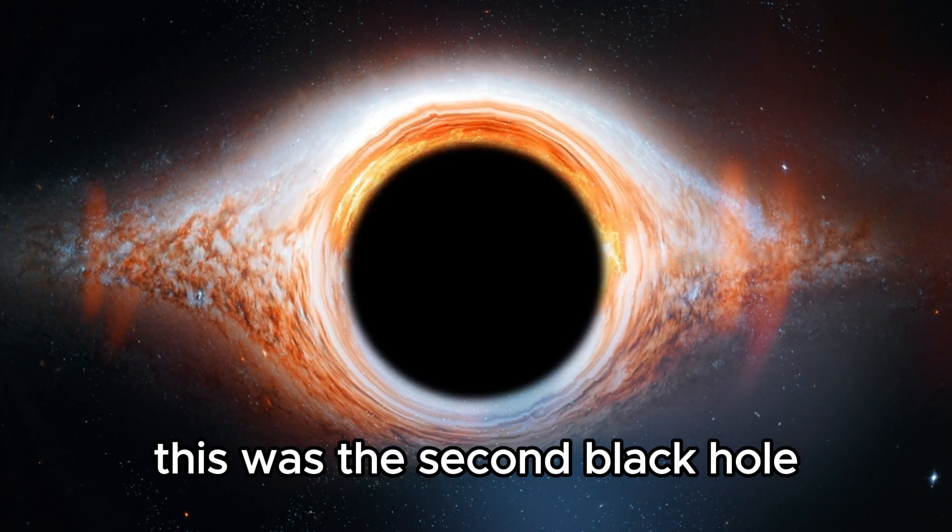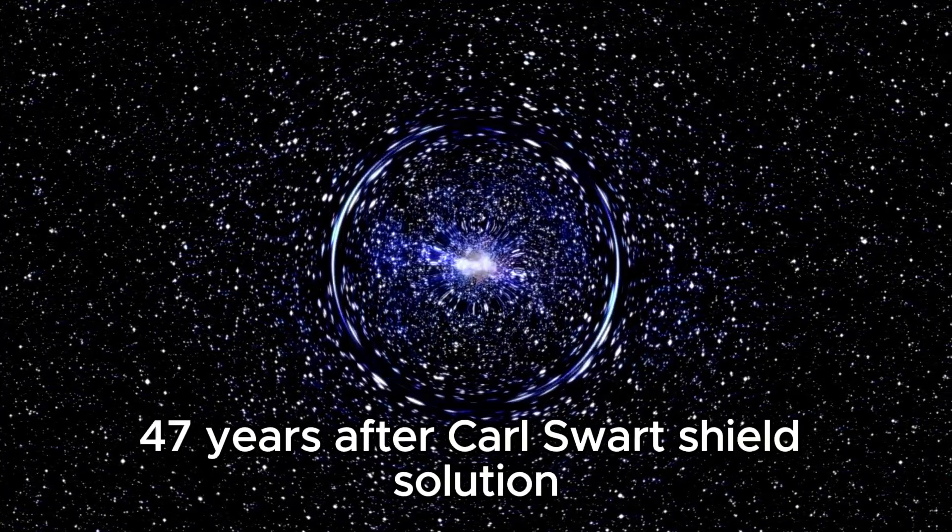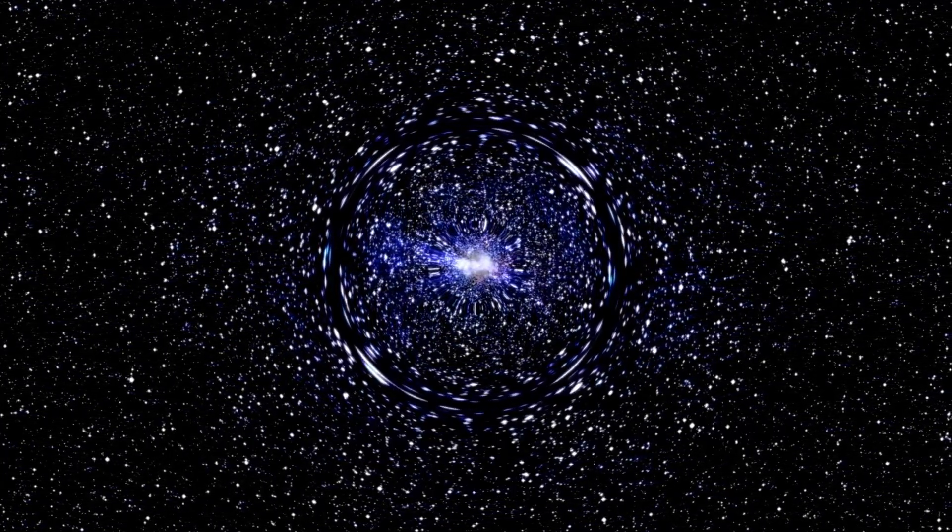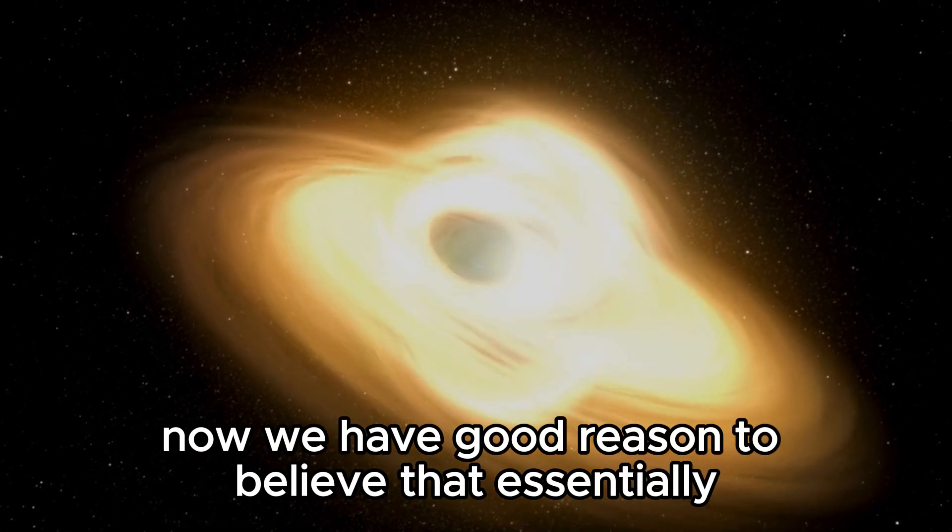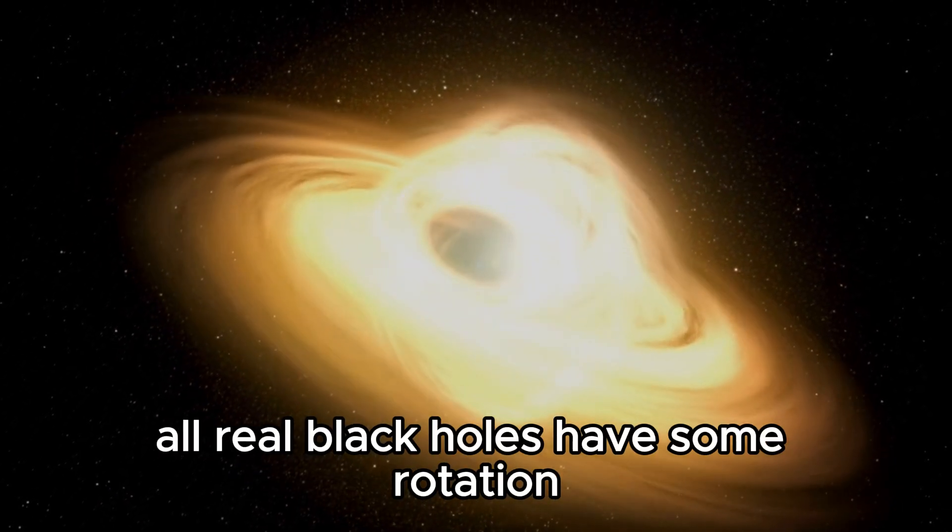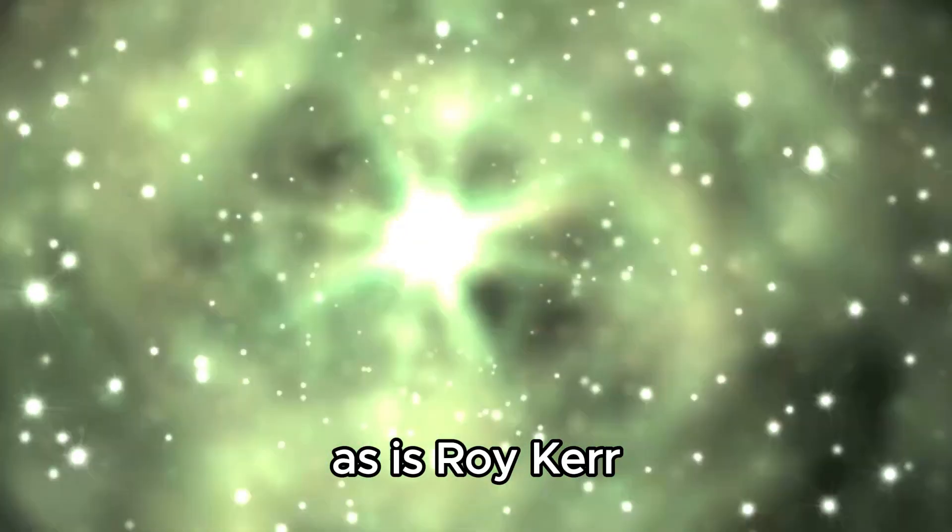This was the second black hole solution to the Einstein equations to be discovered, 47 years after Carl Schwarzschild's solution, and that one just describes the much simpler case of a non-rotating black hole. Now we have good reason to believe that essentially all real black holes have some rotation, so the Kerr solution is kind of a big deal, as is Roy Kerr.